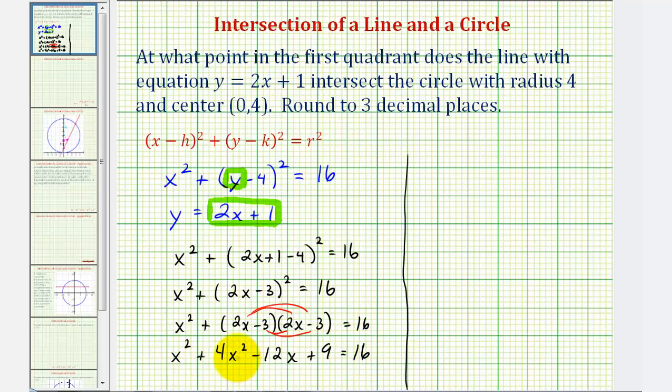x squared plus 4x squared would be 5x squared. Then we have minus 12x plus 9 equals 16. We have a quadratic equation, so we're going to set it equal to zero and see if it factors. So we'll subtract 16 on both sides. That would give us 5x squared minus 12x minus 7 equals 0.